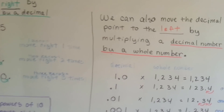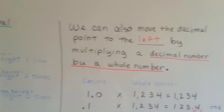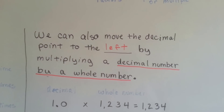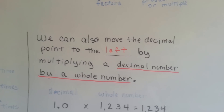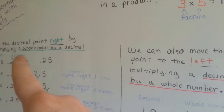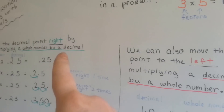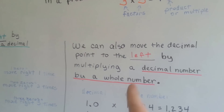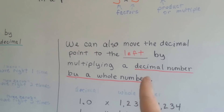We can also move the decimal point to the left by multiplying a decimal by a whole number. Whole number by decimal versus decimal by whole number — now the decimal is first.